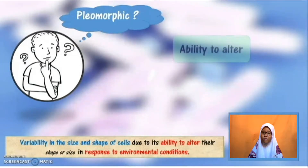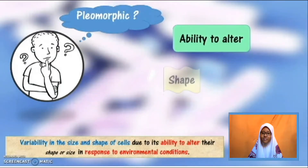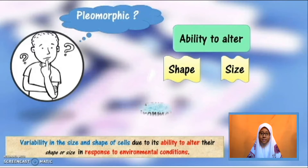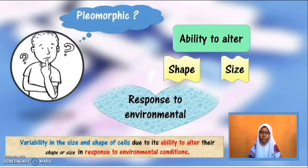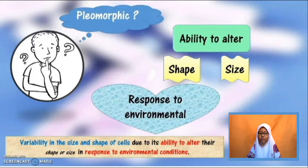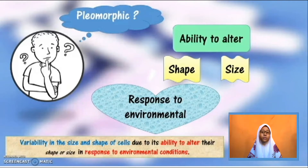Pleomorphic means variability in the size and shape of cells due to its ability to alter their shape or size in response to environmental conditions.